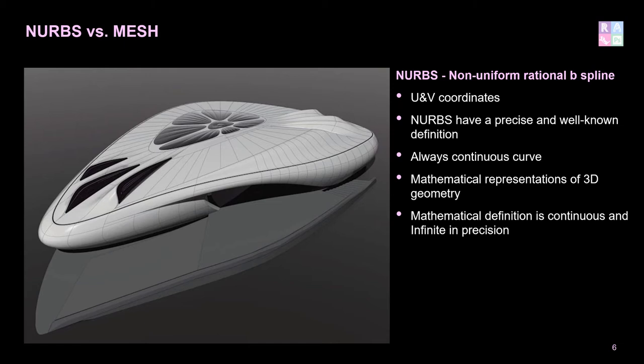A real curved surface does not have flat individual vertices along the curve — it is truly curved. Whether it is a perfect curve or not is indifferent; the definition is continuously curved along the path. If you want to learn more about NURBS and its mathematical definition, feel free to follow the link. You need to understand the principle of NURBS, but you definitely don't need to understand the formulas or equations behind it.